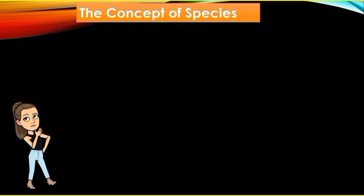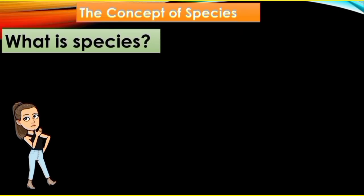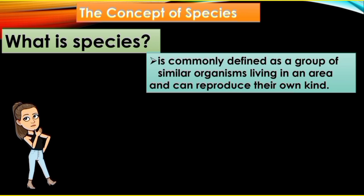Let's begin our discussion with the concept of species. Kapag sinabi nating species, ano bang ibig sabihin nun? Species is commonly defined as a group of similar organisms living in a particular area and can reproduce their own kind. Similar organisms — and the most important thing is that they can reproduce their own kind, meaning they can have offspring.